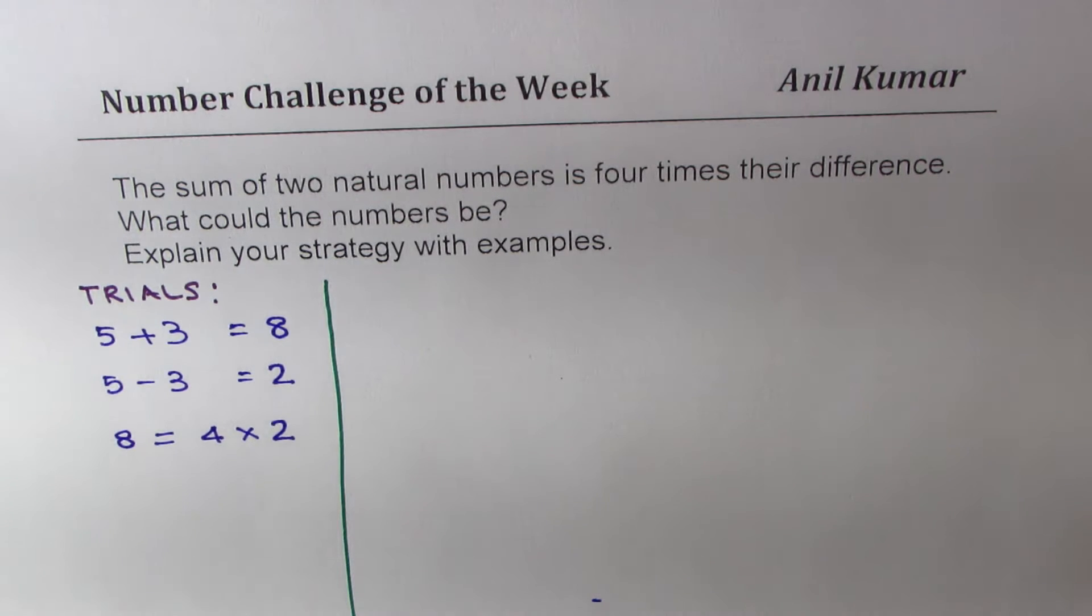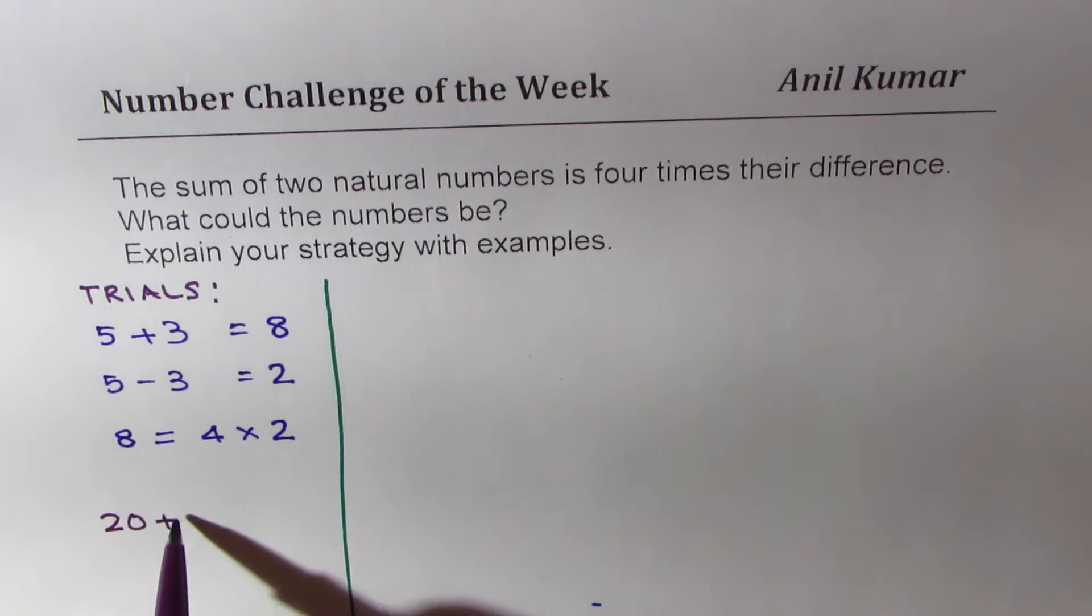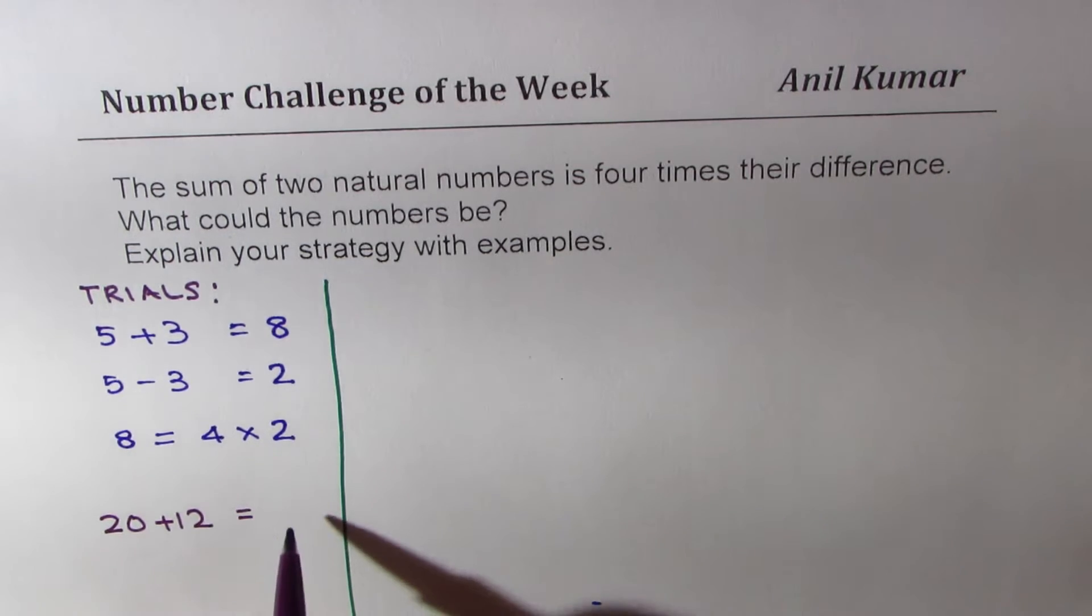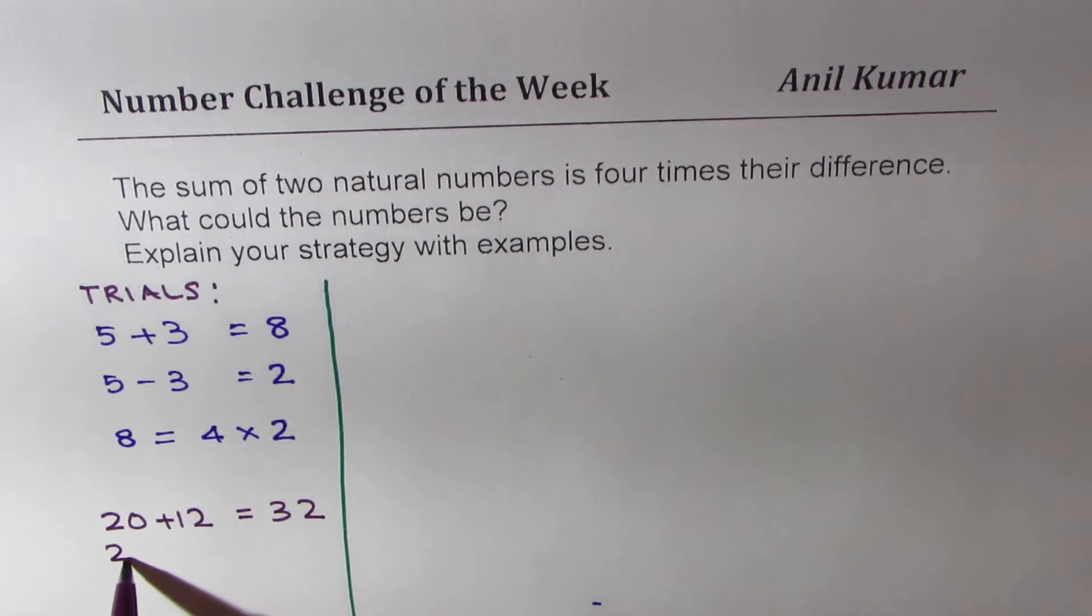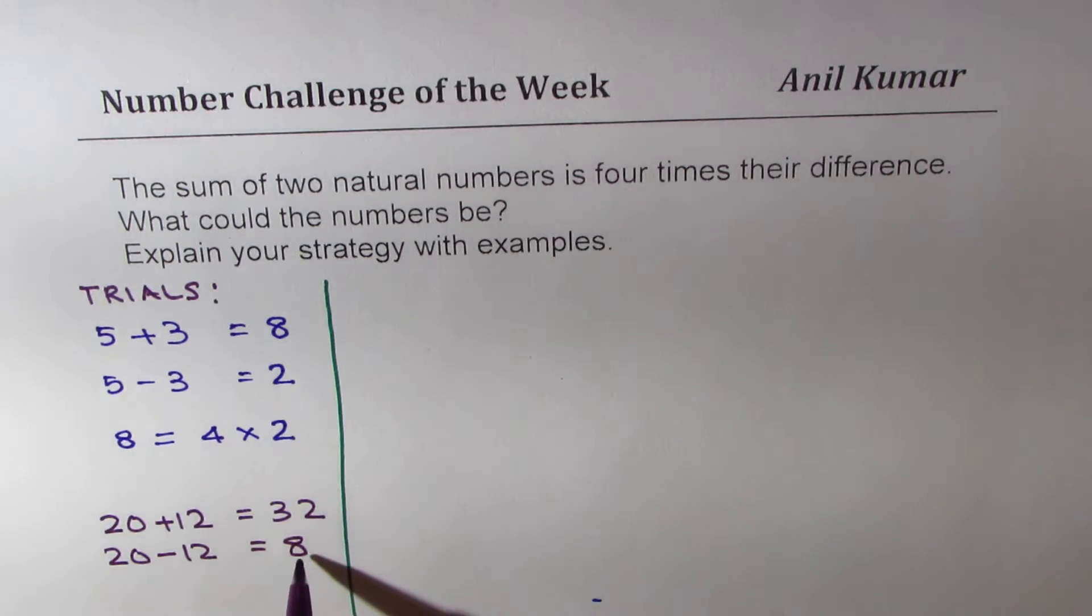When you try, you will get numbers like—let me give you more examples. For example, if I do 20 plus 12, I get 32. And if I do 20 minus 12, I get 8. Now, 8 times 4 is 32. So that is the second set of numbers which we get.